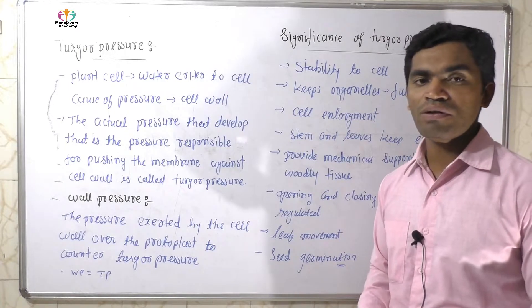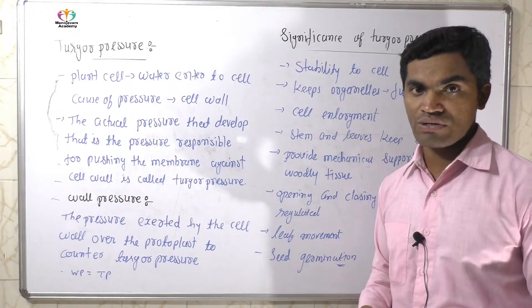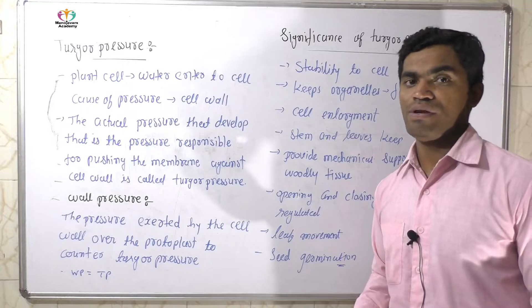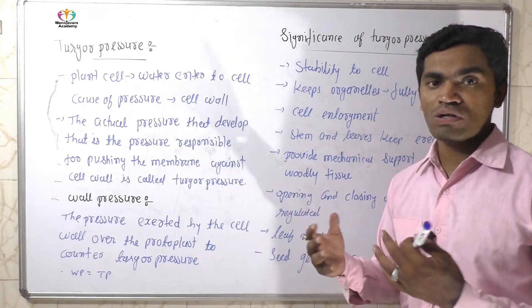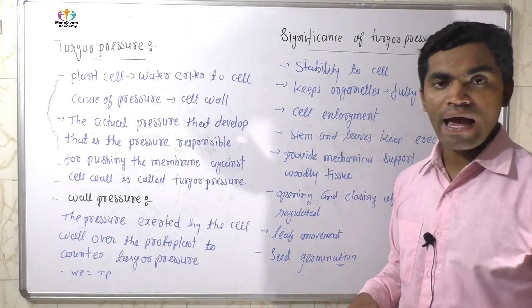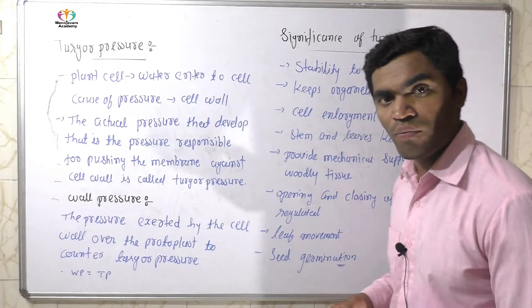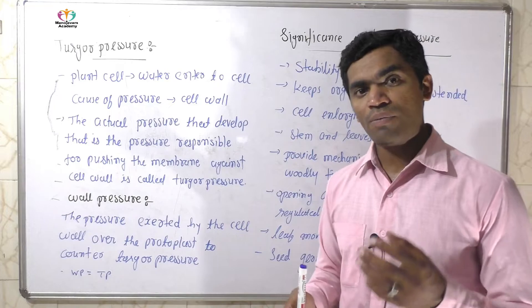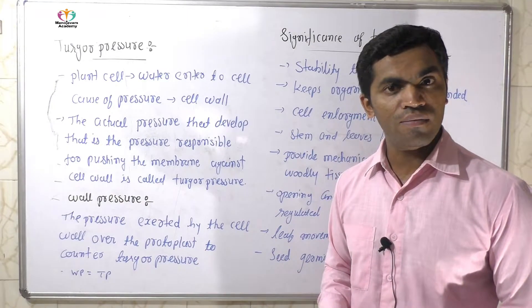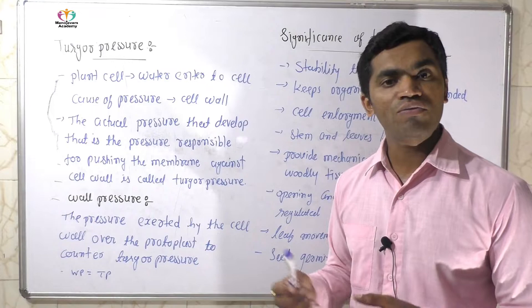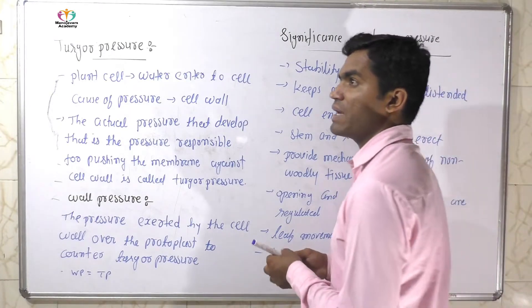Normally, the plant cell cytoplasm has a higher concentration of solute compared to pure water. So water undergoes endosmosis and enters the plant cell. At the time water flows, water flow comes from the outside to the inner side of the cell.